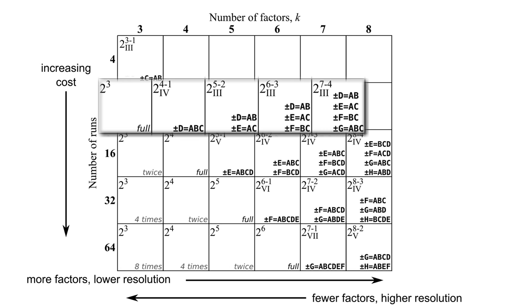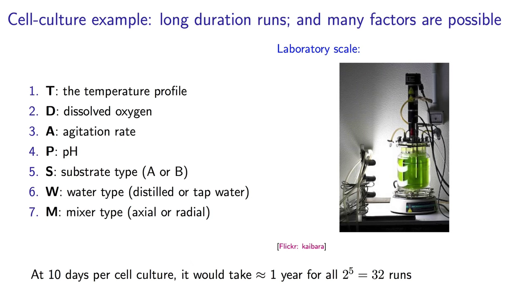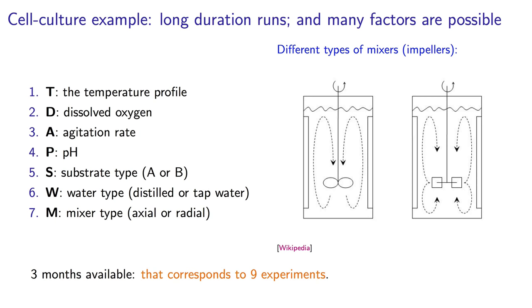In fact, we can go all the way as far up as seven factors in eight experiments. That's pretty incredible. The scientist or engineer at their next meeting can, in fact, ask their colleagues for suggestions on two extra factors, so that they can go from five up to seven.